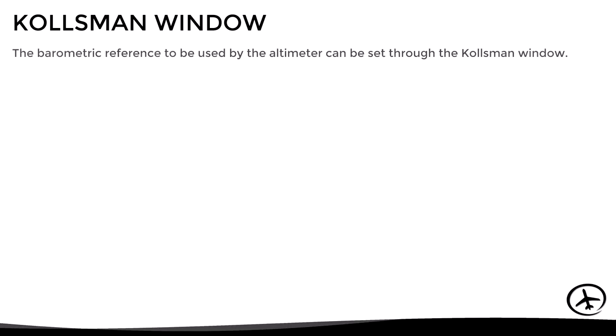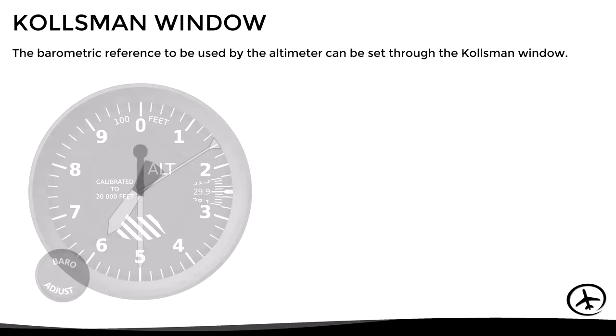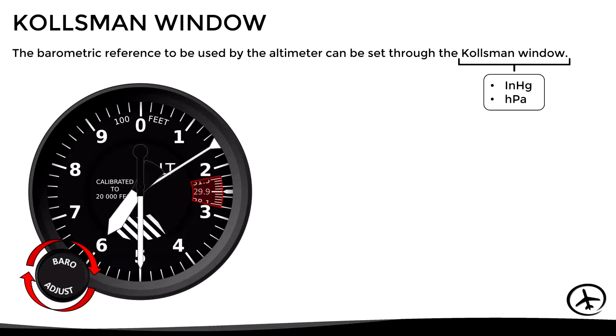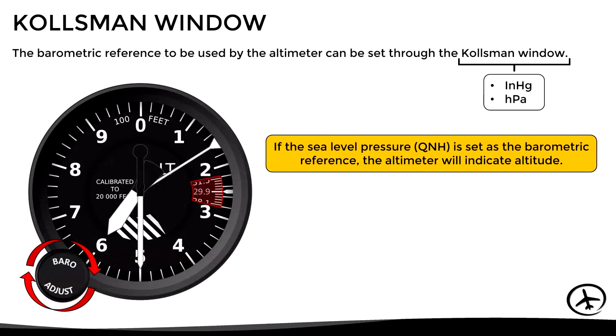The pilot adjusts the barometric reference through the Kollsman window, a small window in the instrument dial. The barometric reference is changed using the knob labeled as baro adjust in the bottom left corner. The Kollsman window is calibrated either in inches of mercury or hectopascals, and there are instruments that include both pressure scales.